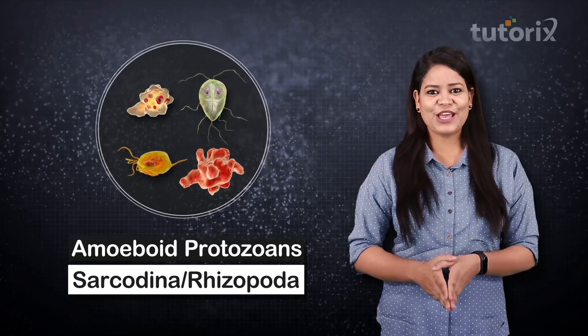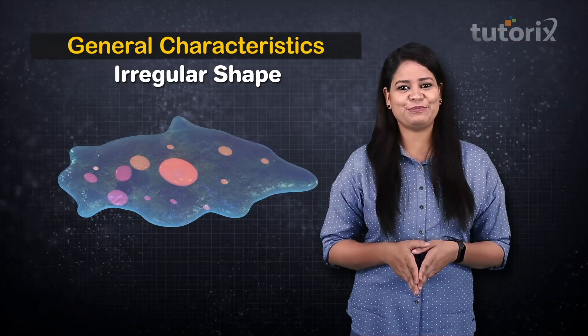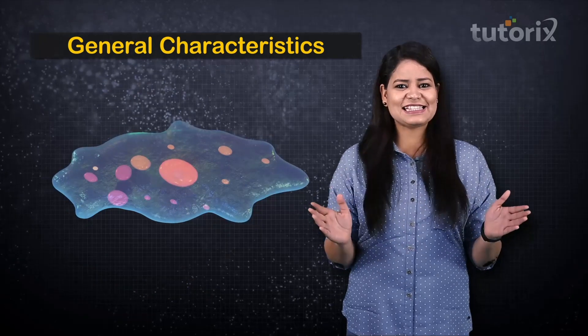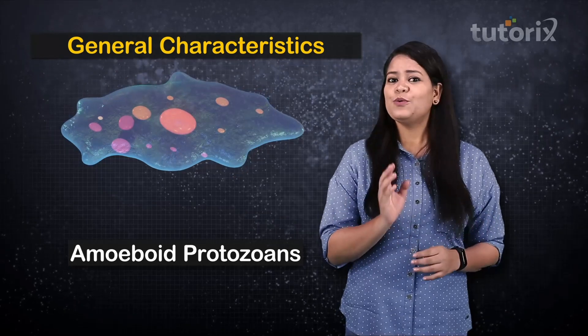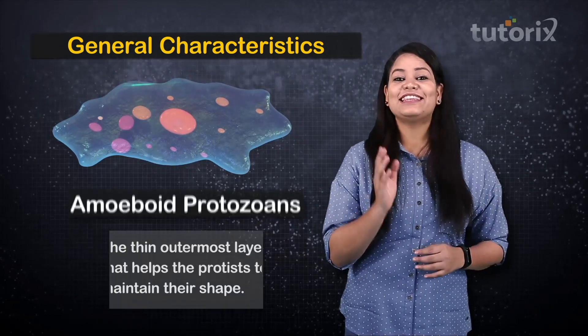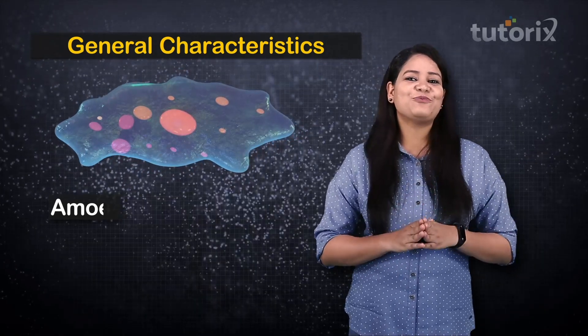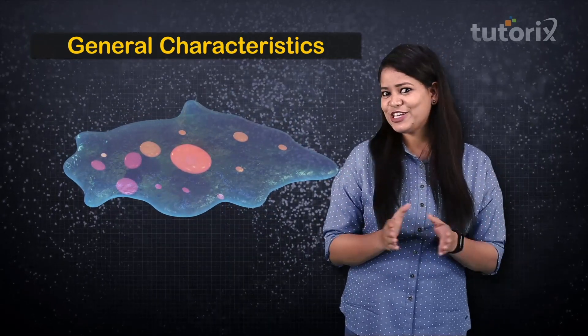Let us now study the general characters of class Sarcodina. The amoeboid protozoans are irregularly shaped. Can you guess their secret to this irregular shape? Well, these amoeboid protozoans do not have a pellicle — the thin outermost layer which helps protozoans maintain their shape. The absence of a pellicle in amoeboid protozoans contributes to their irregularly shaped body.